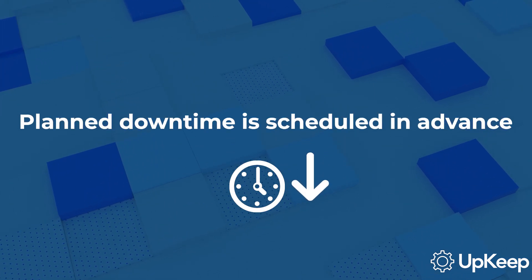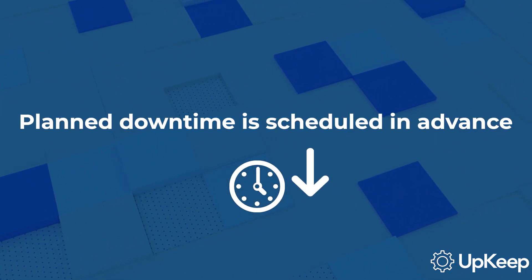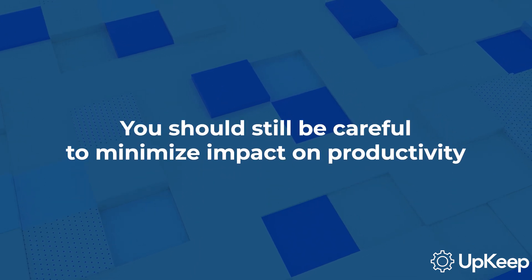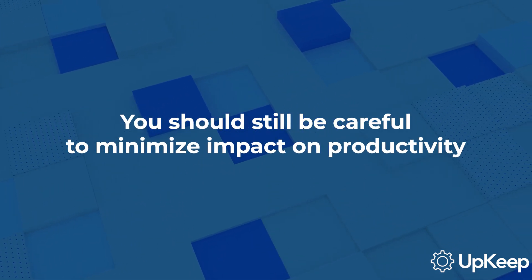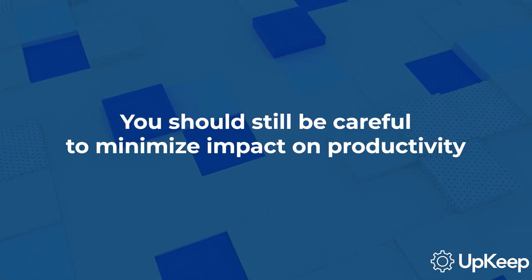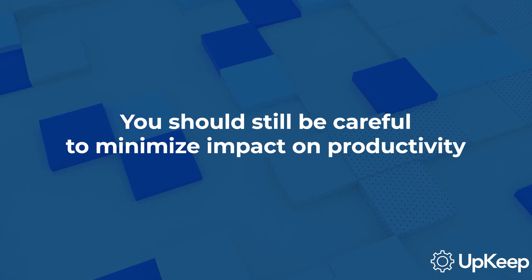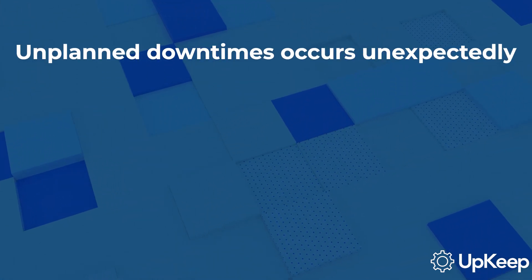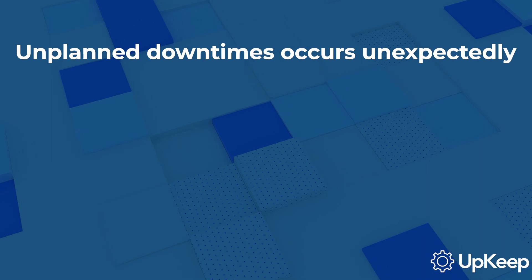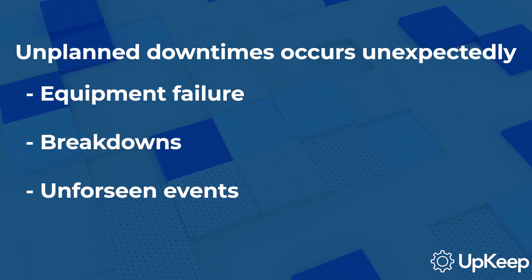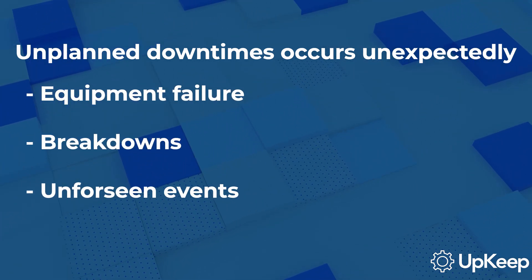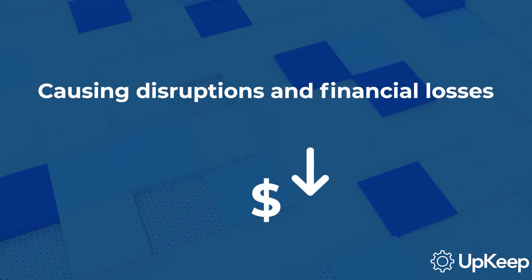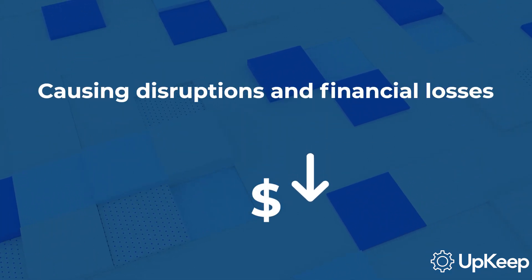Planned downtime is scheduled in advance for maintenance, upgrades, or other expected activities. Even though it's anticipated, it still needs to be carefully managed to minimize its impact on overall productivity. On the other hand, unplanned downtime is much more damaging because it occurs unexpectedly. It can be caused by equipment failures, breakdowns, or other unforeseen events, causing immediate disruptions and financial losses.